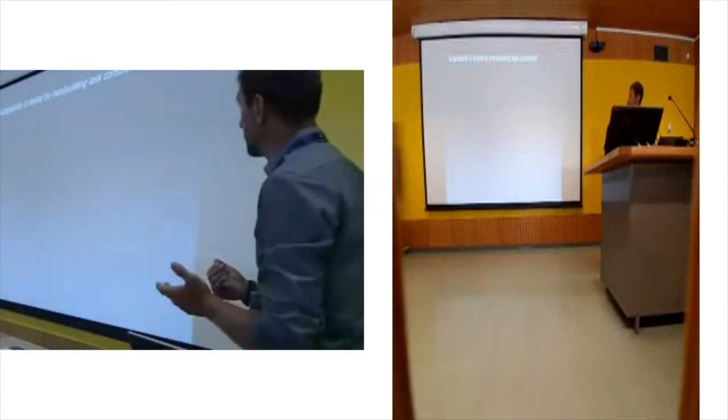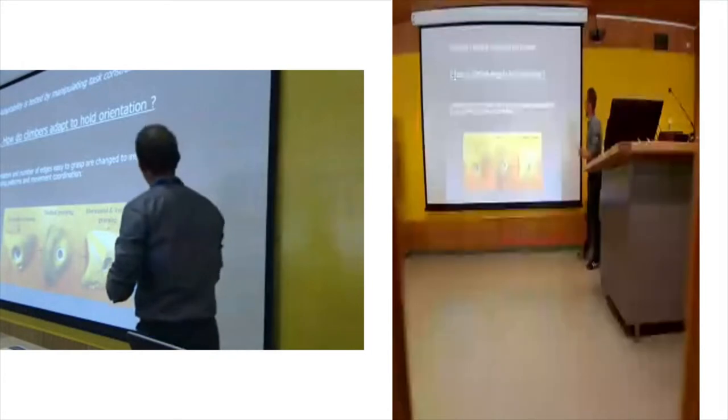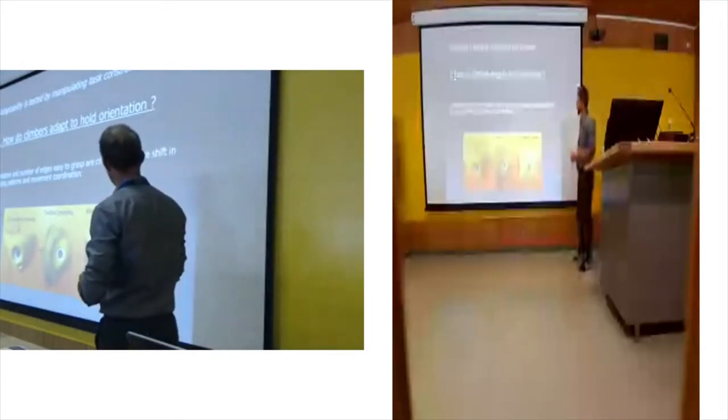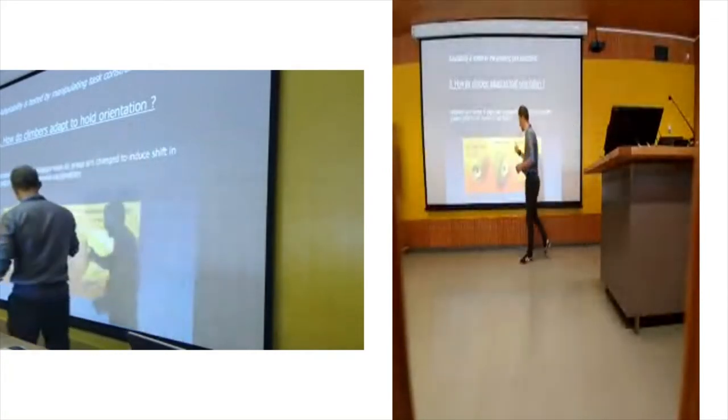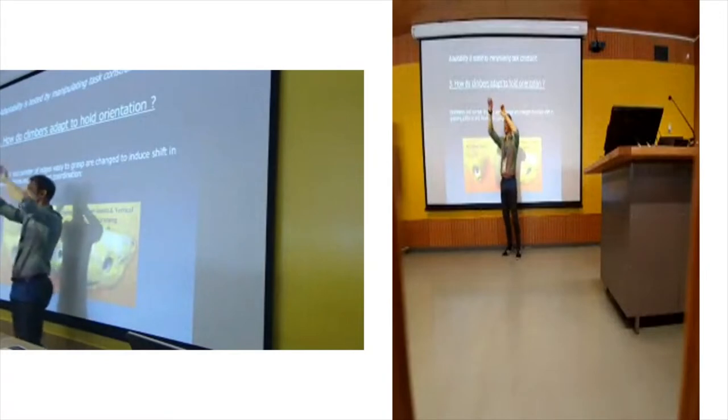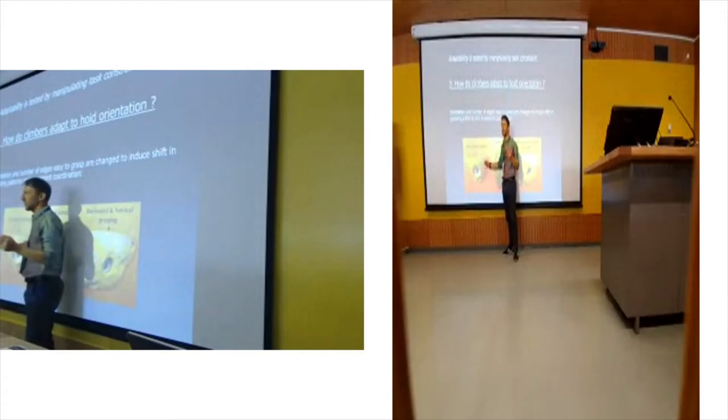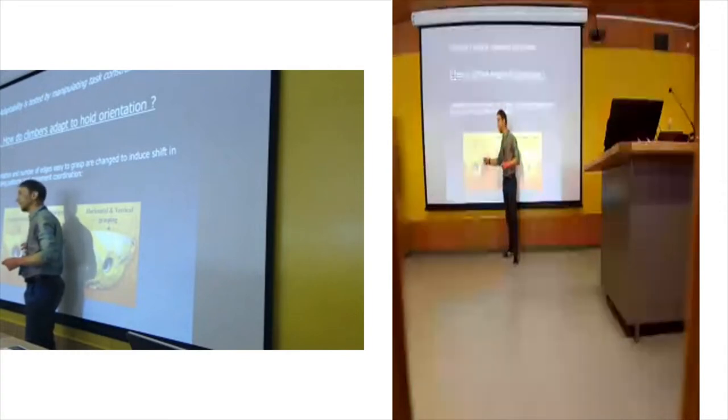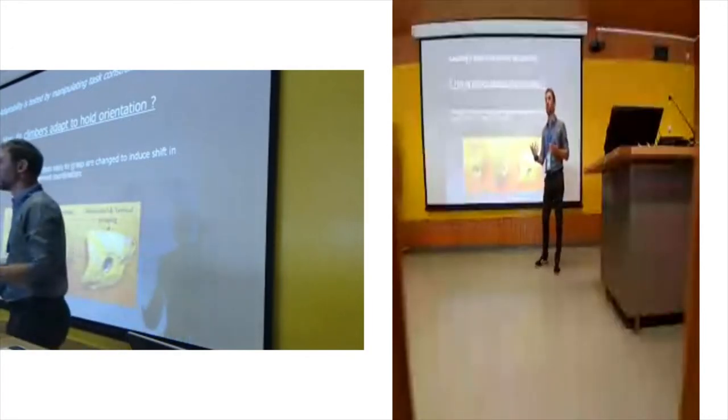How adaptability is tested by manipulating the task constraints. First, my first study I did maybe eight years ago was about using hold orientation as a task constraint. As you can see there, it's quite obvious that if you have to climb a ladder, you take the rung like this. Few persons will take the side like this. So when a novice setter sets a route in a climbing gym, they usually put the hold like this in this orientation, which is very poor in terms of developing the learner.